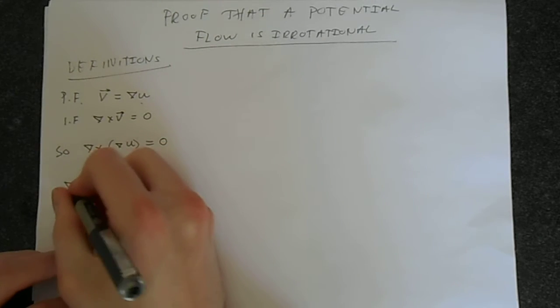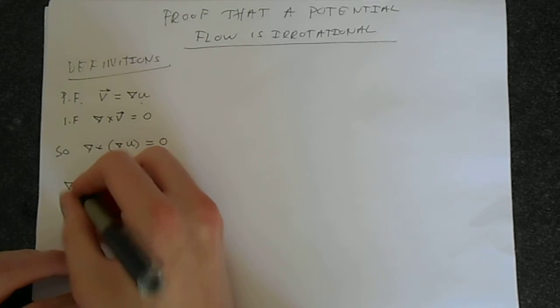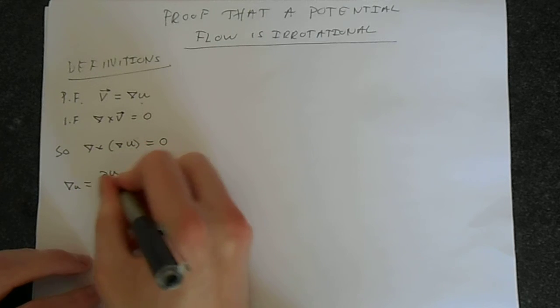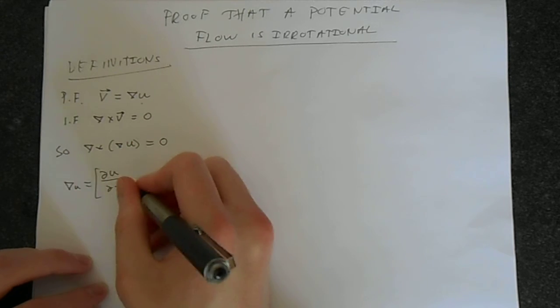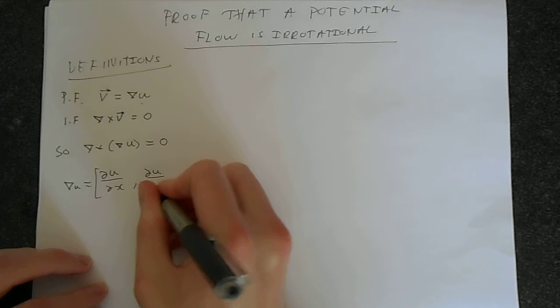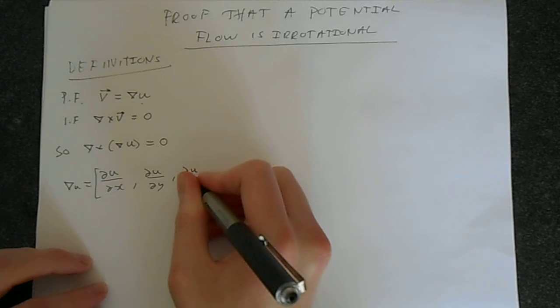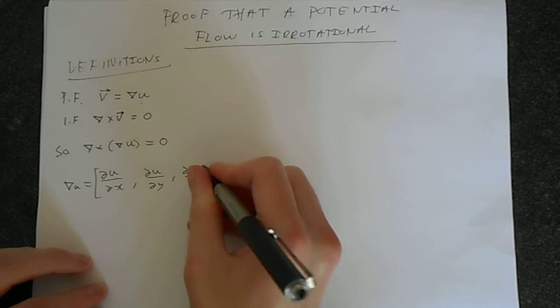Just some more definitions. Clearly, you should know that del u is the derivative with respect to x, derivative with respect to y, and the derivative with respect to z of this function u.